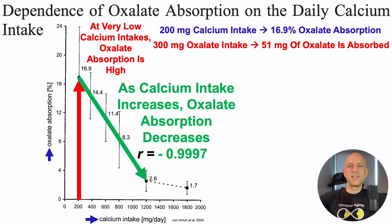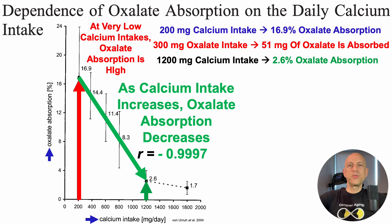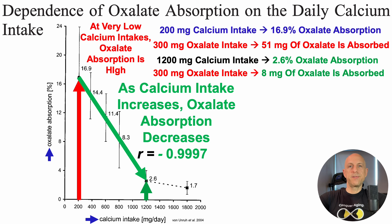To put that into numbers: for someone eating 1,200 mg of calcium per day, there's only 2.6% oxalate absorption. So for that person eating 300 mg of oxalate, only 8 mg of oxalate would be absorbed — in contrast with 51 mg at a 200 mg calcium intake — potentially impacting the plasma levels of oxalate.